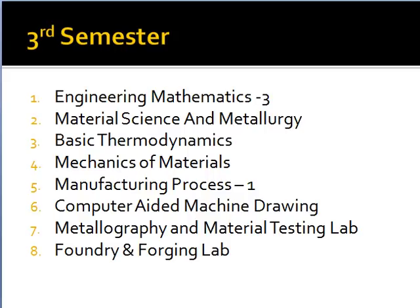From the third semester, this is the time you enter into the core subjects. Since first year was common to all branches, the syllabus is the same for all branches, but from the third semester onwards the course is going to change. The subjects are: engineering mathematics 3, material science and metallurgy, basic thermodynamics, mechanics of materials, manufacturing process 1, computer aided machine drawing, metallography and material testing lab, and foundry and forging lab. Almost every semester you have approximately two labs.